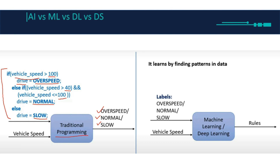Otherwise, which means less than 40, it's going to be slow. That's how it's done in traditional programming. The data I'm going to give is the vehicle speed. If I write 50, it's greater than 40 and less than 100, so after I enter 50 as the vehicle speed, the computer compiles this code and gives me 'normal.'